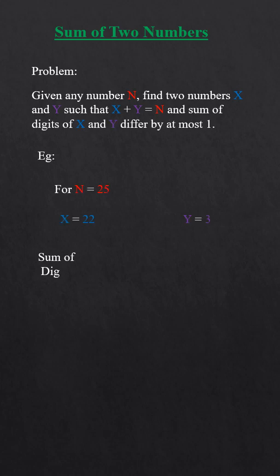For 25, we can take 22 and 3. Sum of digits are 4 and 3, with difference 1.